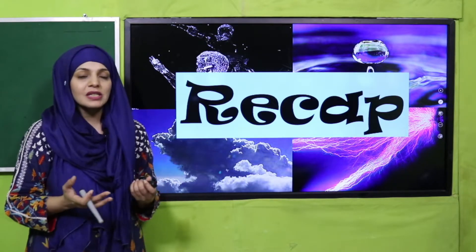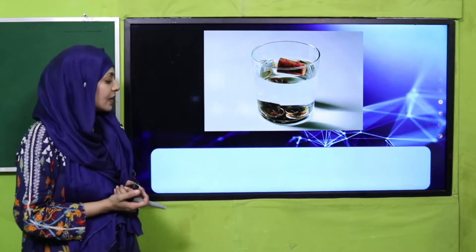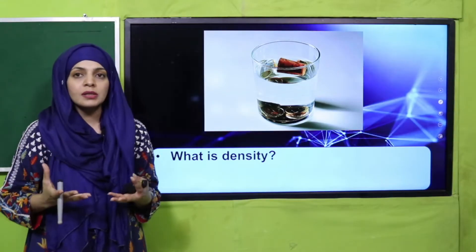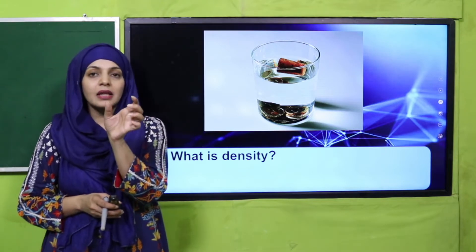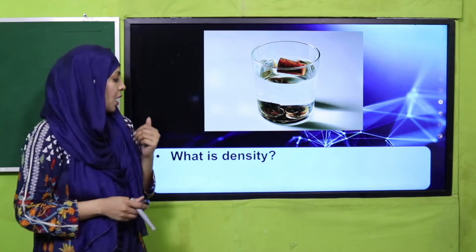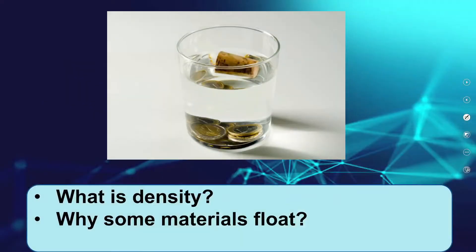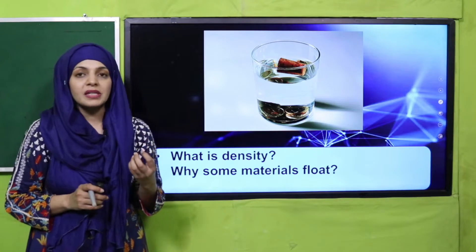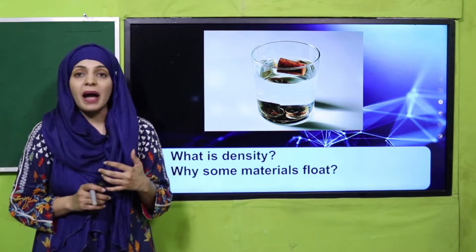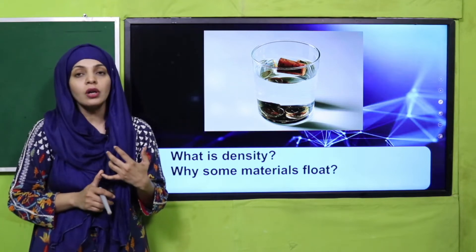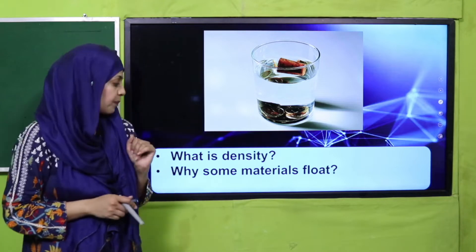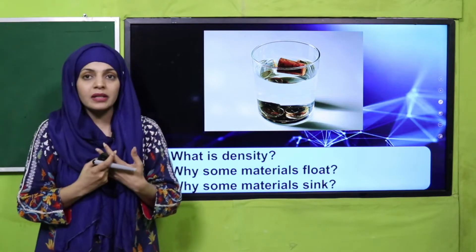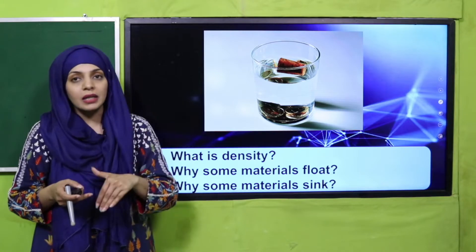Let's quickly start with the recap of the previous lecture. What is density? The amount of matter in a given space is called density — kitni amount of matter ek space ke andar hai usko hum density kehte hain. Why do some materials float? Because they are less dense; their particles have more spacing with air between them, and they are not tightly packed. That is why they float on water.